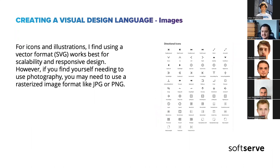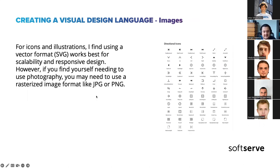Another token in your design system is imagery. It's good to define all the icons and brand images upfront in your application. Maybe the idea is to have icons in SVG format — it's very good for scalability in responsive design. But if you have photography for your web page, it's better to use JPG or PNG. If you want to improve performance, use PNG. But if you want to give very good image quality to the user to sell a specific product, you can use JPG.